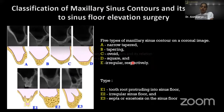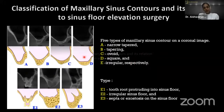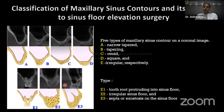There is a classification of maxillary sinus floor contour, which is very important for sinus floor elevation surgery. The types are: A — narrow tapered, B — tapered, C — totally ovoid, D — square, and E — irregular. In the irregular subtype, E1 indicates tooth roots protruding into the sinus floor, and E3 indicates the presence of septa.